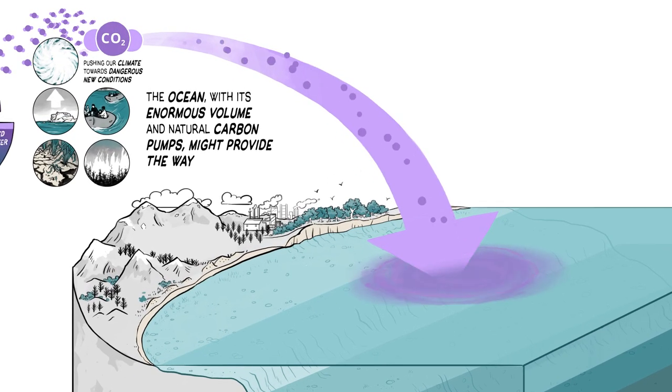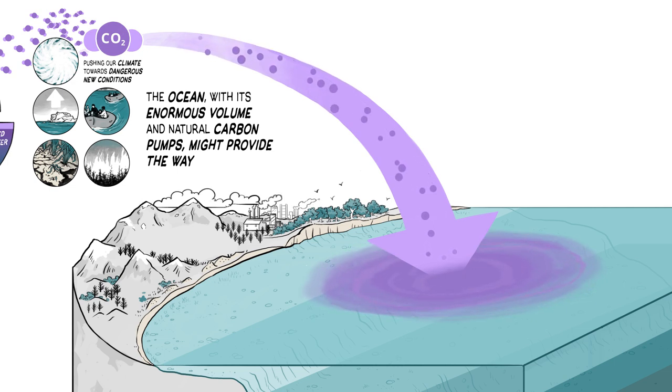CO2 diffuses into the surface layer of the ocean whenever it is more abundant in the air than in the water. Once dissolved, powerful carbon pumps remove CO2 from the surface.